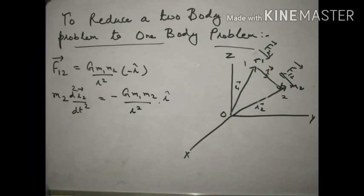According to Newton's second law, we write m2·d²r2/dt², because the second mass is m2 and its position vector from the origin is r2. Equating both forces: m2·d²r2/dt² = −G·m1·m2/r²·r-cap.